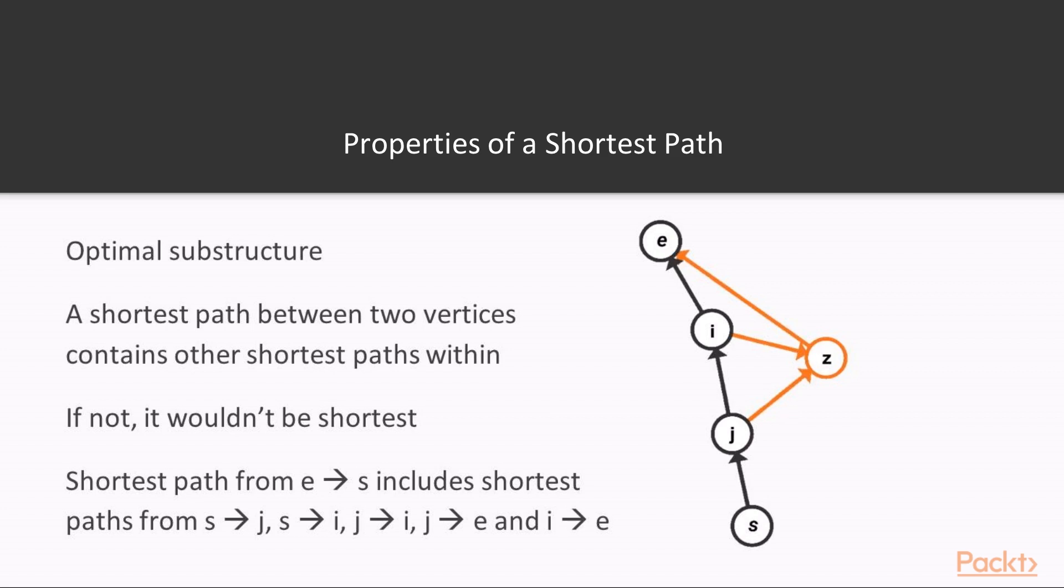In the example shown, the path from e to s includes 5 other shortest paths: from s to j, from s to i, from j to i, from j to e, and from i to e.